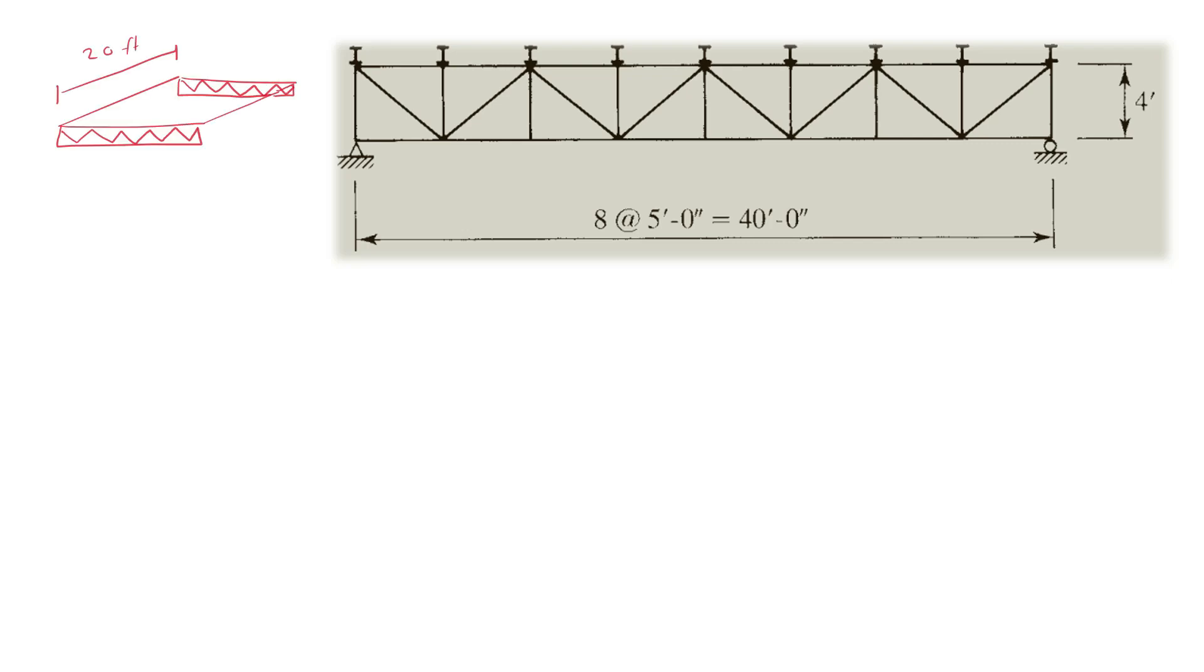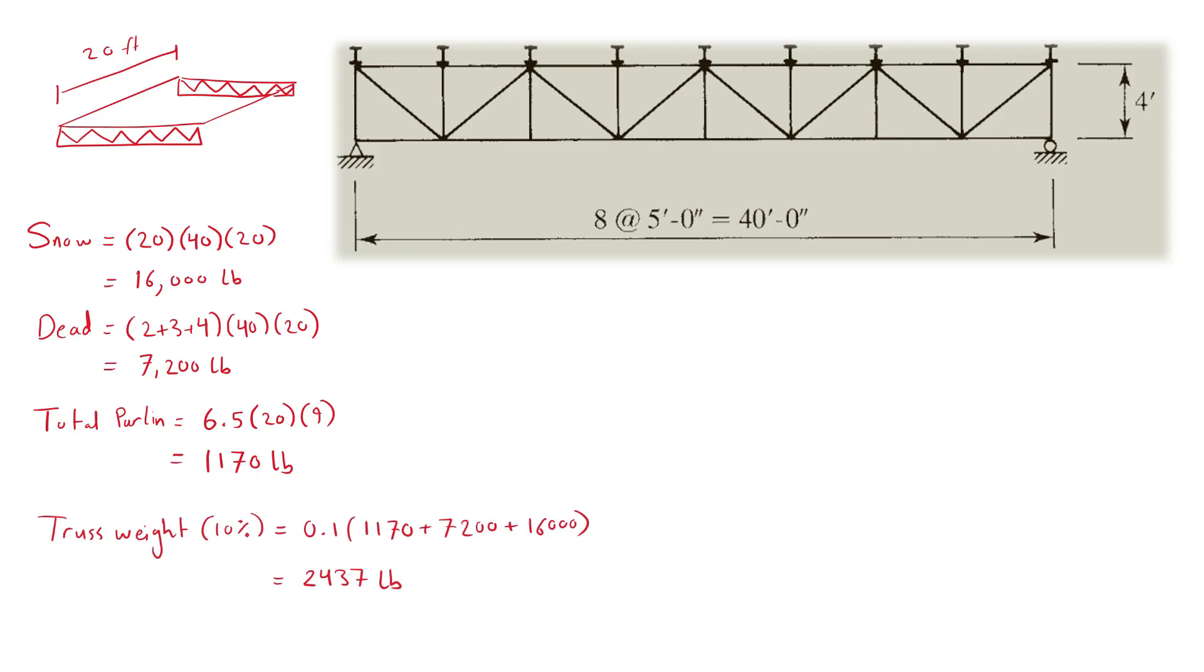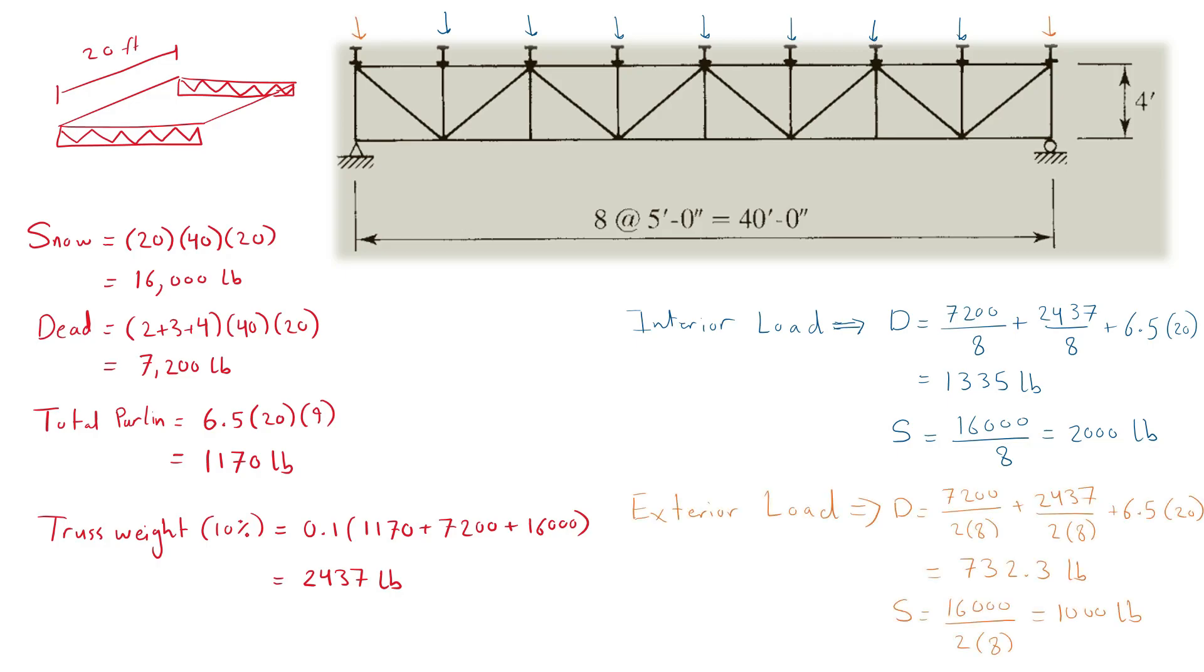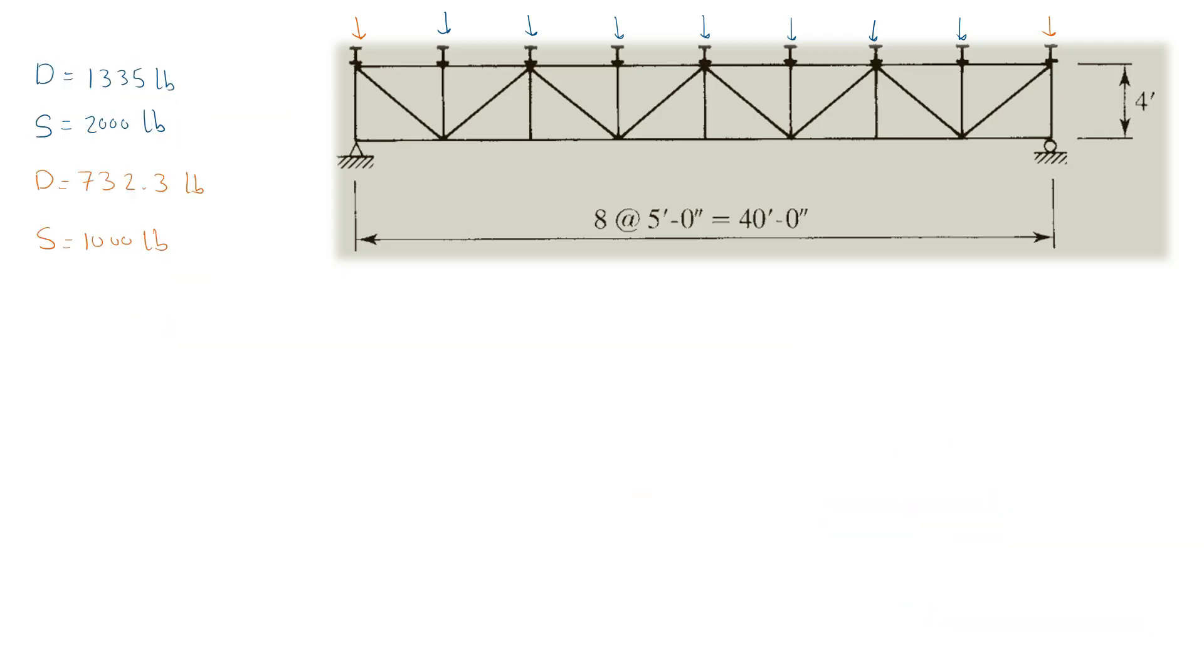Remember that the span between trusses is 20 feet, and thus the area is the length of the truss, 40 multiplied by 20. The weight of the purlins is found by multiplying the unit weight by the length of each purlin by the number of purlins. The weight of the truss is estimated by taking 10% of the sum of those loads. The interior dead and snow loads will then be determined, followed by the exterior loads which will have half of the tributary area. We use the load combination to find the applied interior and exterior point loads.